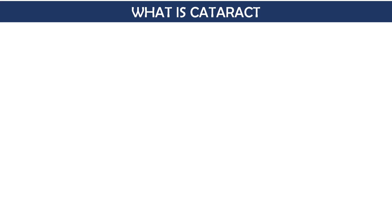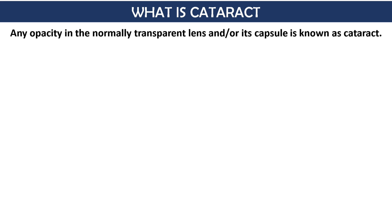So let's start with what is cataract. As you all know, the lens is a transparent structure. If any opacity in the normally transparent lens or in its capsule is present or develops, we call it cataract. The reason for that opacification can be any physical or chemical factor which disturbs the water and electrolyte balance within the lens fibers.